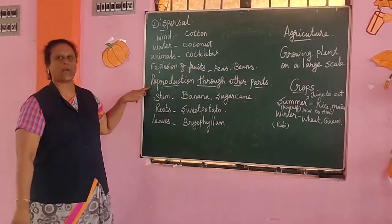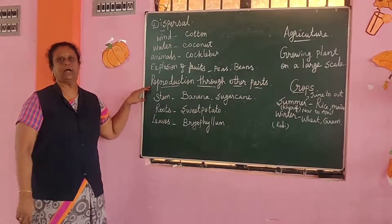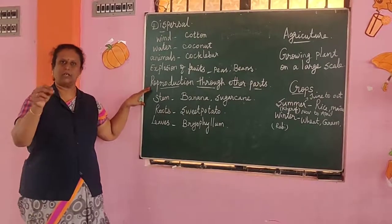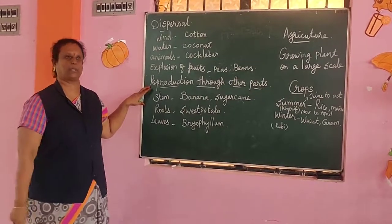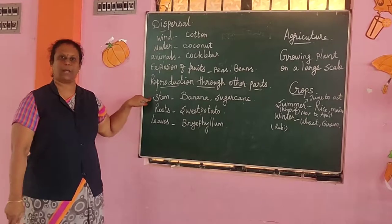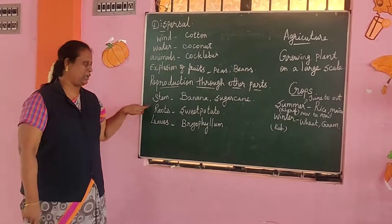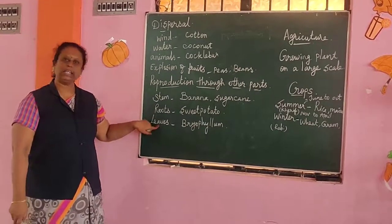Reproduction through other plant parts: reproduction can occur through stems, roots, and leaves — not only through seeds.